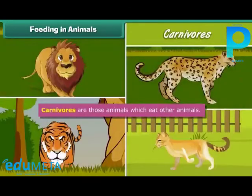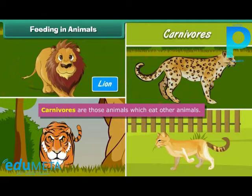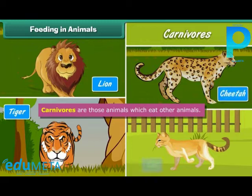Carnivorous are those animals which eat other animals. Examples include lion, tiger, cheetah, and cat.